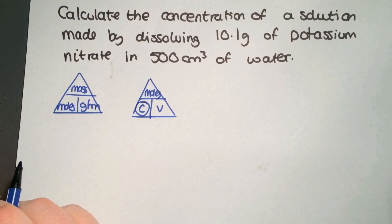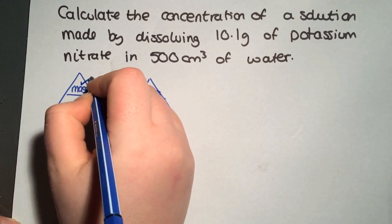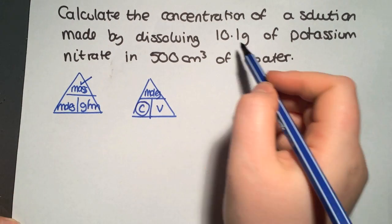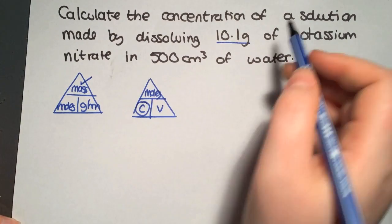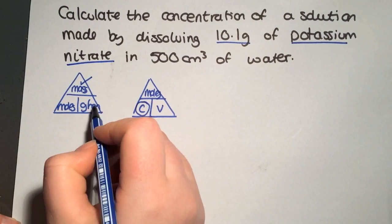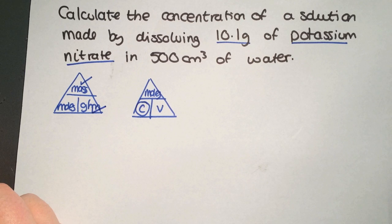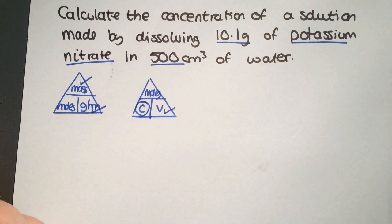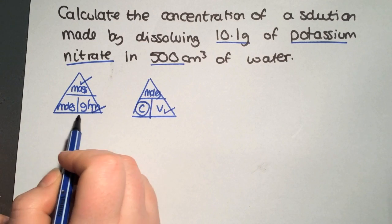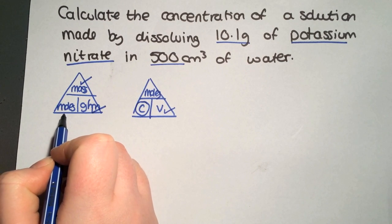You've been given a mass of 10.1 grams, the name of the chemical (potassium nitrate), so you can work out the gram formula mass, and you've been given the volume of 500 centimeters cubed. You've got two ticks in this triangle, so we can work out the moles.